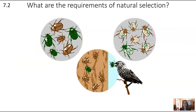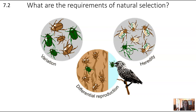There are three main requirements of natural selection. The first is variation — there needs to be differences within the population. The second is heredity — these differences need to be inherited from generation to generation. The third is differential reproduction — the traits need to be correlated with a difference in fitness.